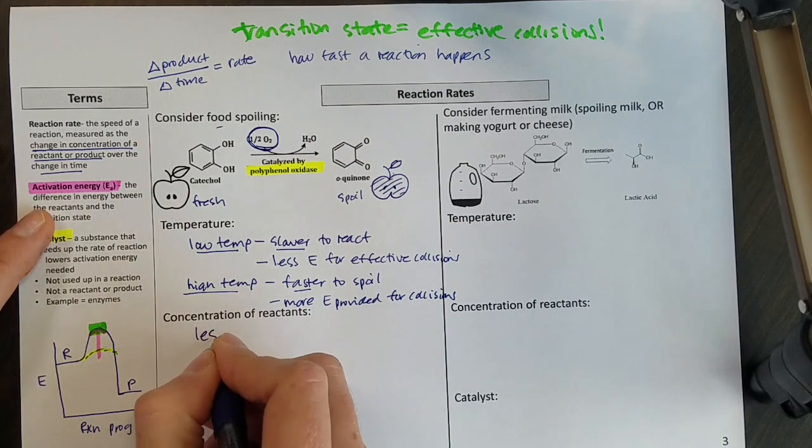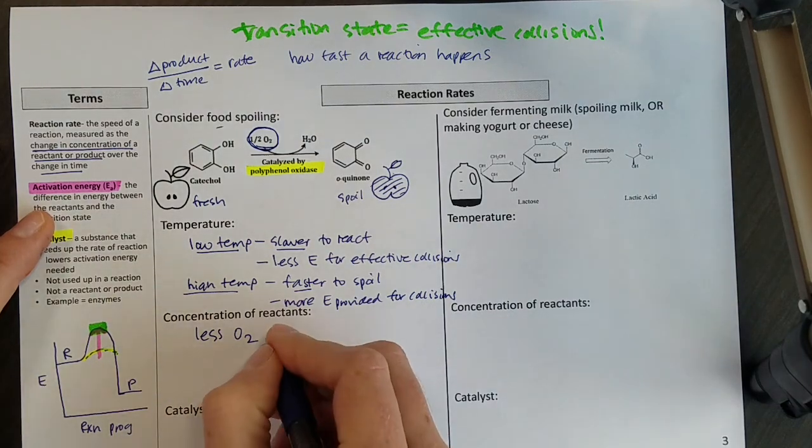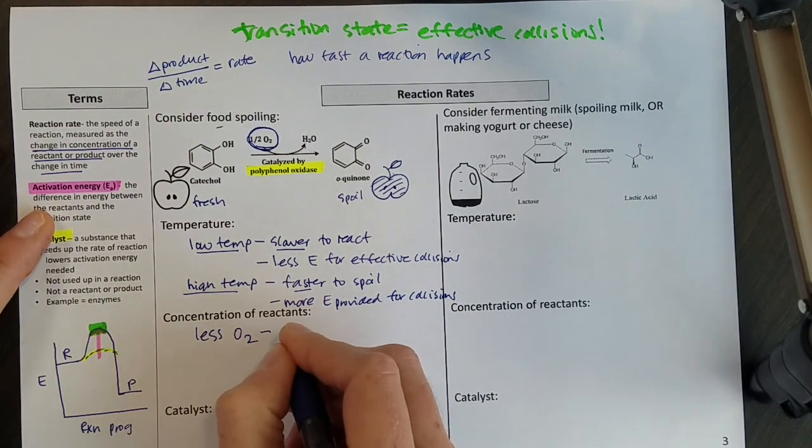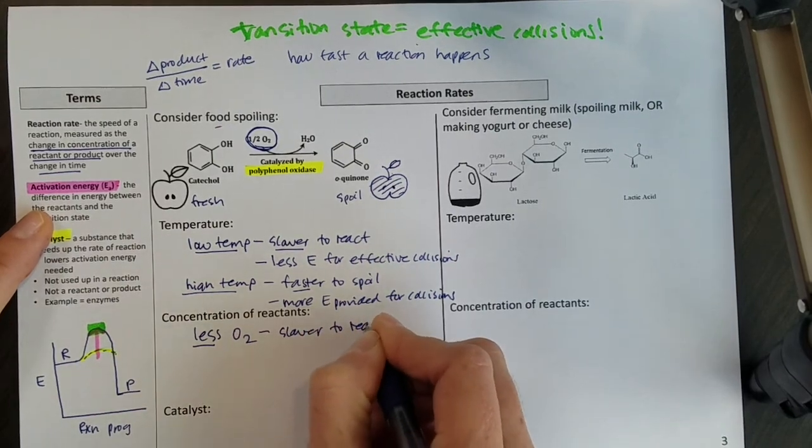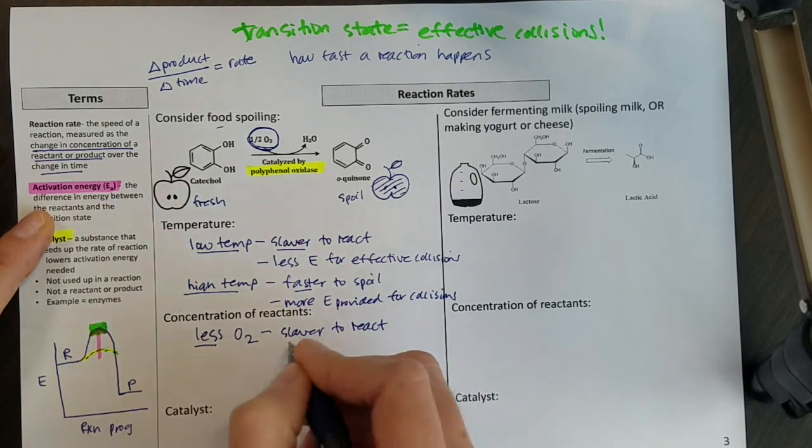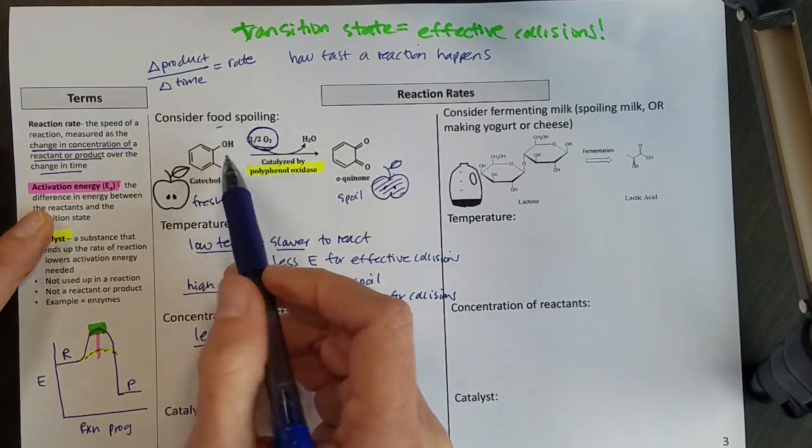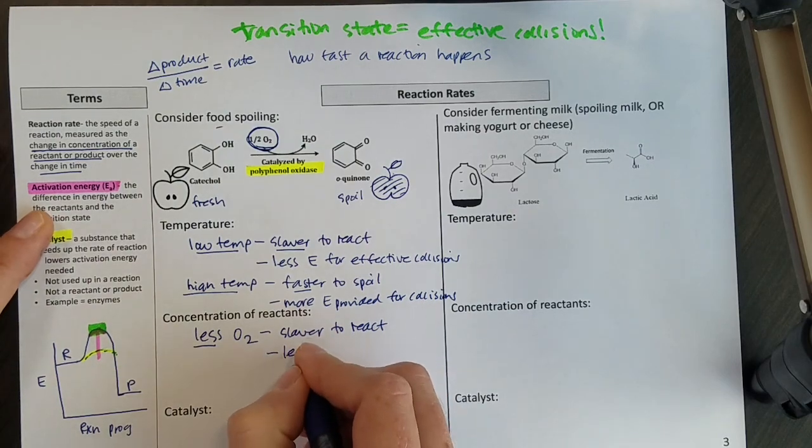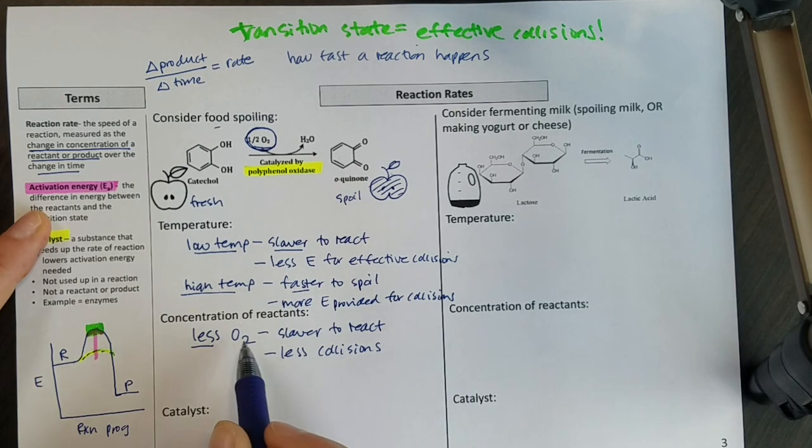So if we have less oxygen in this case, which is one of our reactants, then we'll find that our food is slower to react, we have a slower reaction rate, and that would be because there's less oxygen, there's less chance for these two to collide. So we have less collisions, just because there's less O2.